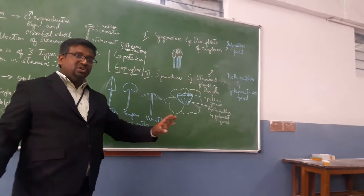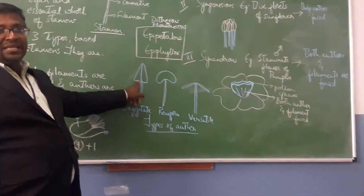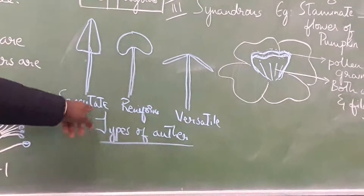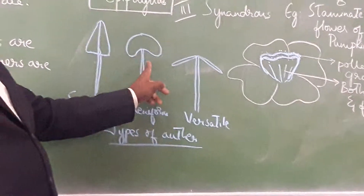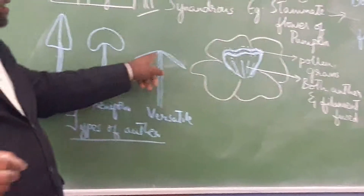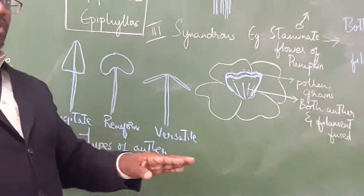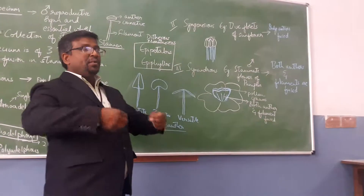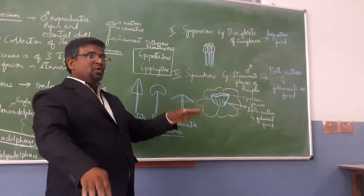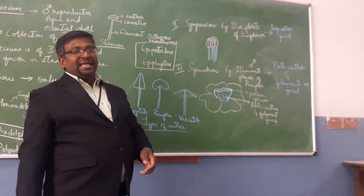Based on the shape of anthers, if they are arrow-shaped we call them sagittate anthers, and if kidney-shaped or bean-shaped we call them reniform anthers. In the case of grasses, the anther lobes are present at the center and are free, allowing a seesaw or versatile movement because grasses are wind-pollinated. This type of anther is called a versatile anther.